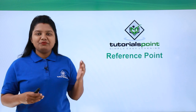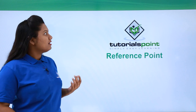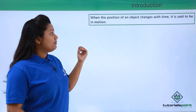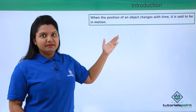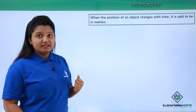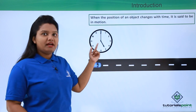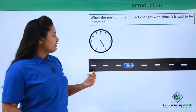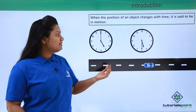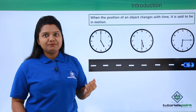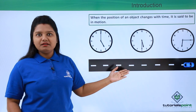Hello everyone. In this video we'll be discussing reference points. In the previous video we discussed that when the position of an object changes with time it is said to be in motion. Here, consider a situation where we have a straight road and a car starts at five o'clock; at 5:30 it has reached a certain point, and at 6:15 it has reached another point. Since the position of the car was changing with time, the car was in motion.